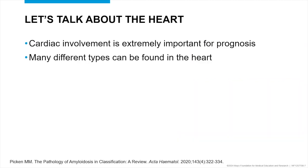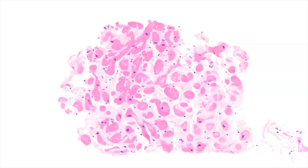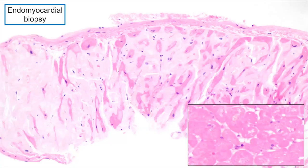Let's talk about the heart. Cardiac involvement is very important for prognosis. Many different types can be in the heart — AL and ATTR amongst the most common. Here's an endomyocardial biopsy. This would be the endomyocardium — where the blood would be in the chamber — and underneath are all the myocytes. The inset at higher power shows what myocytes should look like: you shouldn't have anything in between them.